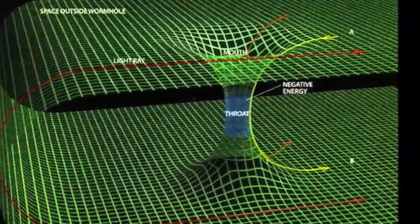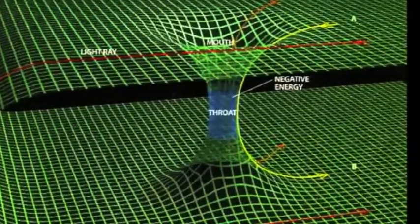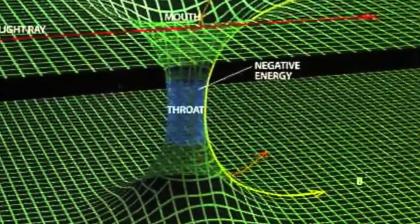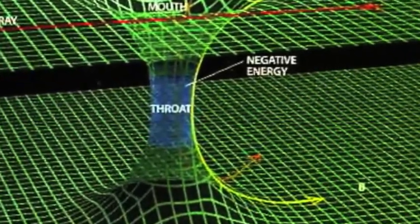Exotic matter is basically matter with a negative charge. By inserting the matter into a wormhole, we are creating a type of force field which will keep the wormhole open for an amount of time just long enough for people to safely pass through.